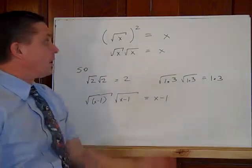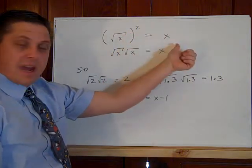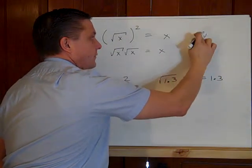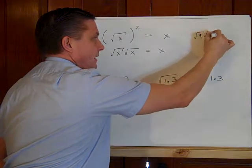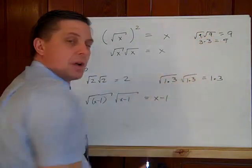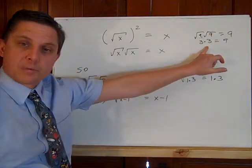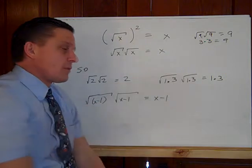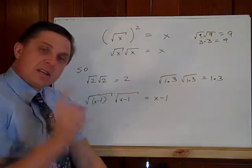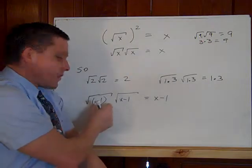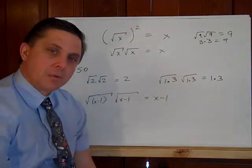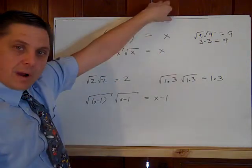Now, that leads us to our first rule. A square root squared has to be the number. The square root of nine times the square root of nine has to make nine. But it doesn't have to be a perfect square. The square root of two times the square root of two is the whole number two. The square root of 1.3 times the square root of 1.3 is 1.3. And it can be any binomial. The square root of x minus 1 times the square root of x minus 1, same binomial is x minus 1.